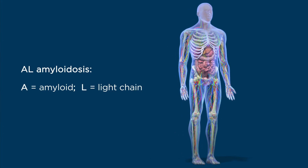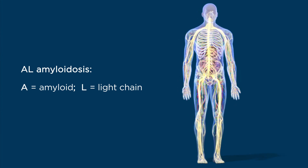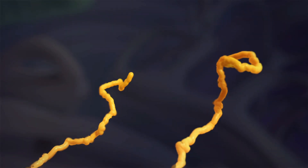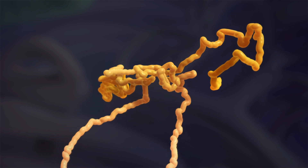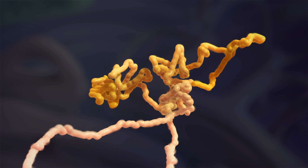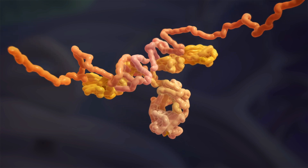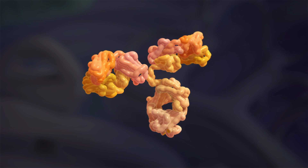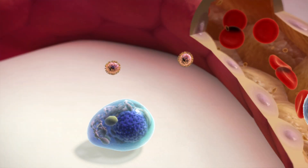Light chain proteins are components of antibodies. Each antibody is made up of four protein molecules: two heavy chains and two light chains, which attach to each other before it can function properly.